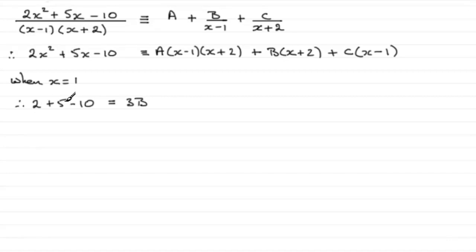So 2 and 5 is 7, take 10 is minus 3, so we end up with minus 3 equals 3b. So it follows that minus 3 equals 3b, and clearly from this it follows that b equals minus 1.